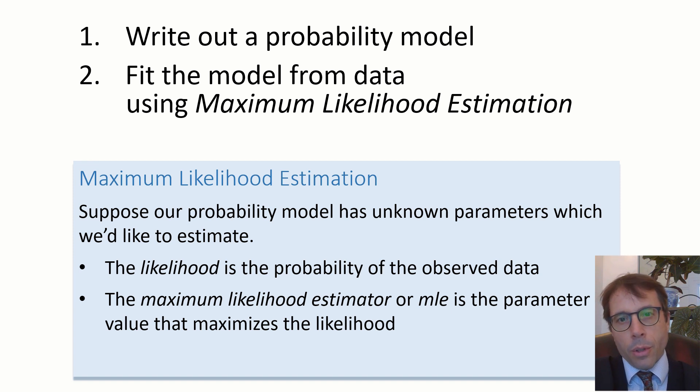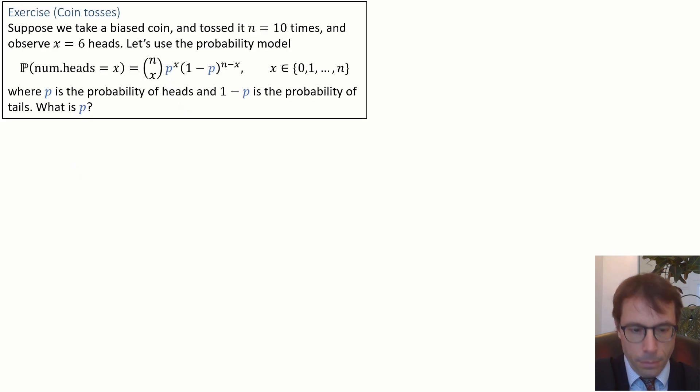Let's work through some examples. We'll start with the biased coin, the favorite example of probabilists everywhere. Suppose we take a biased coin and toss it ten times and observe six heads. Let's use the following probability model: probability of seeing number of heads equal to X is dot dot dot, where the parameters are p, the probability of heads, and 1 minus p, the probability of tails. The question asks us, what is p?